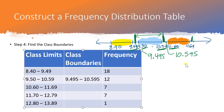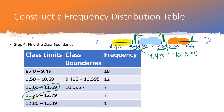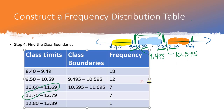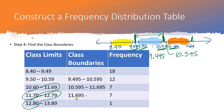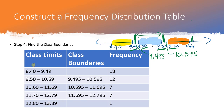For the third class, the lower boundary starts where the previous one ended at 10.595, and the upper boundary is halfway between 11.69 and 11.70, which is 11.695. The fourth class lower boundary matches that upper, and ends at 12.795. The first and last classes are the hardest because there are no classes before or after them.